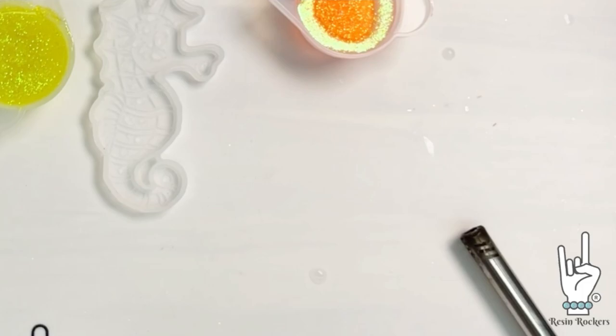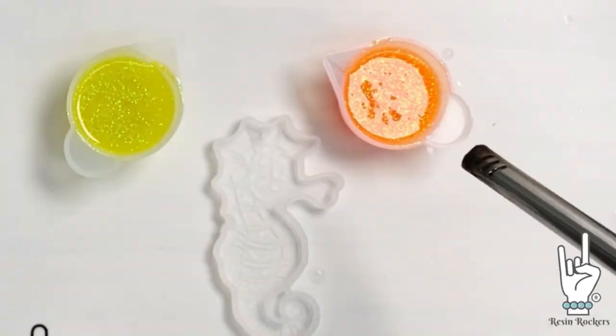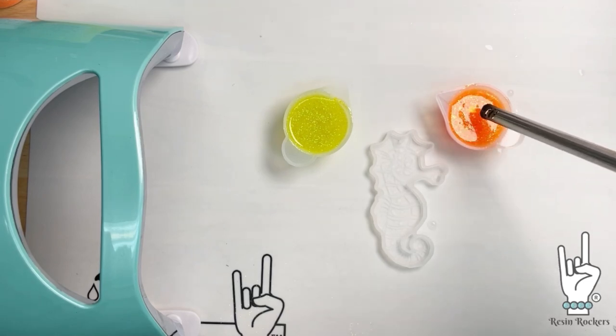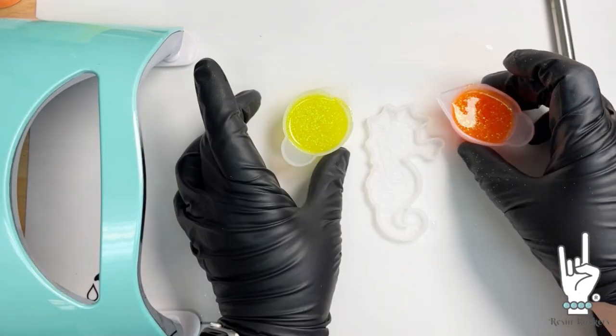Once you get both of your glitters mixed up the way that you want them, we are just going to get rid of any surface bubbles that we created by running a lighter over the top of the cup and popping those bubbles. This is the easiest way to do that.